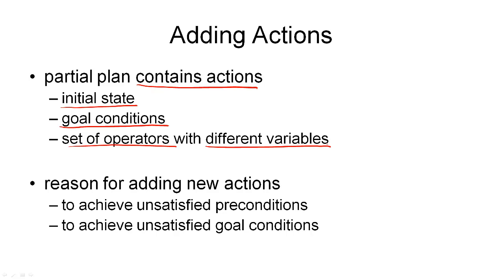Adding an action to a plan is a plan refinement operation. But I've already talked about the least commitment principle in planning, and that means we only want to introduce new actions into our plan for a good reason. The two reasons we have for adding new actions to a plan can be that we have an unsatisfied precondition in our plan that we still need to achieve — so there's another action that has a precondition that is not supported anywhere, and we may add an action that has that precondition as an effect. Or the second case is that we have an unsatisfied goal condition that we still need to satisfy, and we may use an effect of a newly added action to satisfy that goal condition.